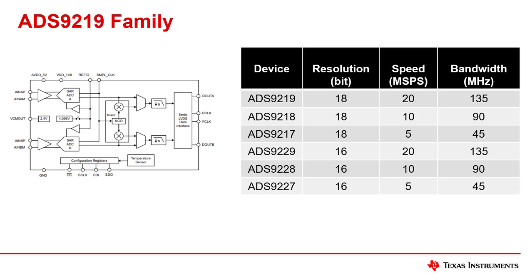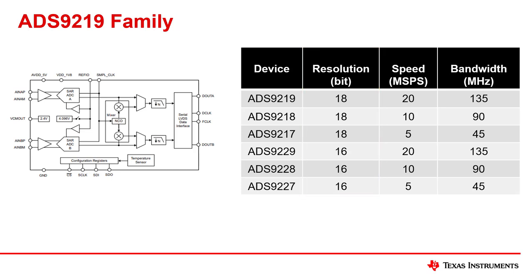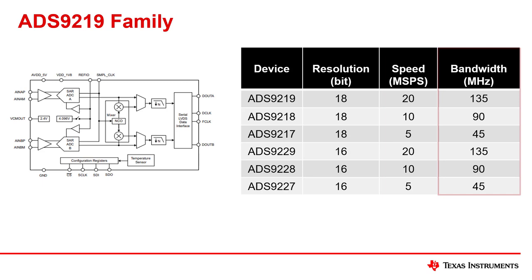The ADS9219 family comes in either 16-bit or 18-bit resolution, and in a variety of speed modes ranging from 5 mega samples per second up to 20 mega samples per second, all with a wide bandwidth capability.